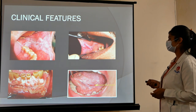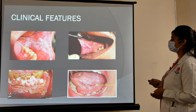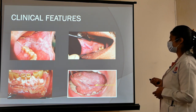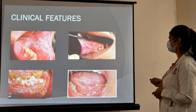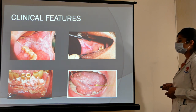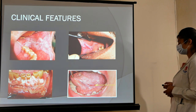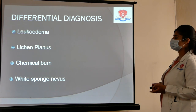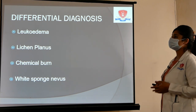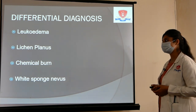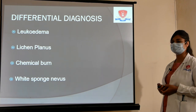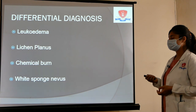Clinical features include a white homogenous patch on the buccal mucosa extending from the commissure to the retromolar area. Speckled leukoplakia shows a white patch with red areas; verrucous leukoplakia has a cauliflower-like shape. Differential diagnosis includes leukoedema (disappears on stretching), lichen planus (striae pattern), chemical burns (distinguished by case history), and white sponge nevus (congenital, present since birth). Leukoplakia is caused by smokeless tobacco use.